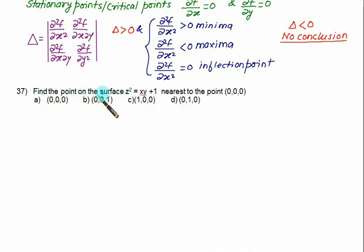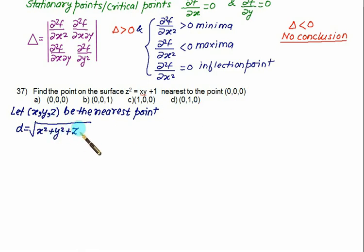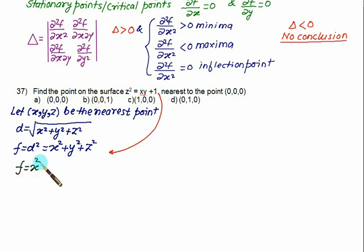Now we have a similar problem, but this time we are given the plane z² = xy + 1, and we want the nearest point to the origin (0, 0, 0). Let (x, y, z) be the nearest point on the plane. The distance formula gives d = √(x² + y² + z²). We define f = x² + y² + z², and replace z² with xy + 1, giving f = x² + y² + xy + 1.